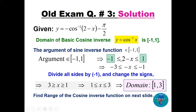Setting −1 ≤ 2 − x ≤ 1: subtract 2 from all sides to get −3 ≤ −x ≤ −1, then divide by −1 and flip the inequalities to get 1 ≤ x ≤ 3. So the domain of the function is [1, 3].